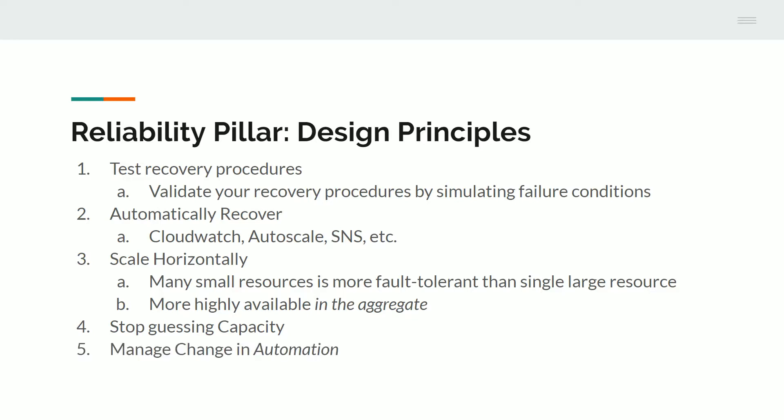A key point is to manage change through automation. When you're ready to change something, rather than going in and changing that individual service or instance, the idea is to change the automation script — for example, the one provisioning, deploying, or configuring that service. You make a change only to the automation process and then run it. If it works, it's set indefinitely in that working state; if it doesn't work, you can update the automation script and respond accordingly.